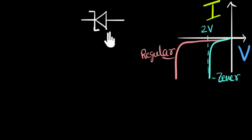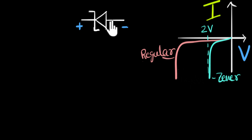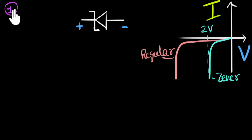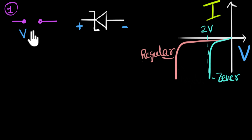Let's see how this diode behaves under various circumstances. To make sure it is in reverse bias, we have to make sure one end is positive and the other is negative, forcing the current in the opposite direction. As long as the reverse bias is less than two volts, the current flowing through the diode is extremely tiny — it's almost as if the diode doesn't conduct at all. So we can assume this diode acts like an open circuit when the voltage across it is less than two volts.